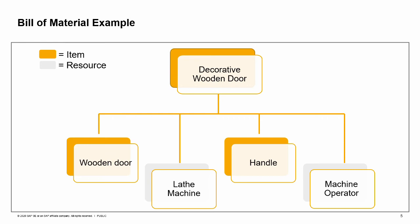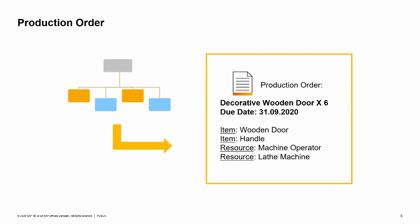To start a production process, this bill of materials is copied to a production order. A production order is a command to produce or repair a production item. A bill of materials is copied into the production order document, manually or in an automatic process. Then, the needed quantity of the finished good is entered, along with the required due date of production and other relevant data.